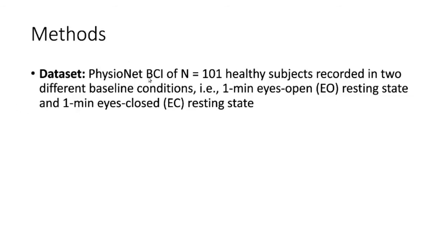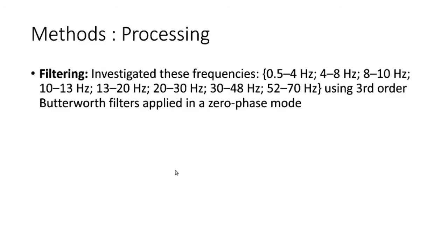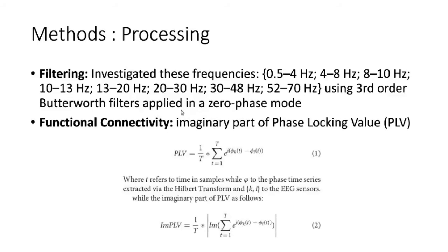The paper uses an open-source dataset: BCI with 101 healthy subjects recorded at baseline — one minute eyes open, one minute eyes closed, one session per subject. Preprocessing included notch filtering, single-subject data whitening with PCA to remove artifacts, and then bandpass filtering into specific frequency bands. The chronnectome is repeated on each of these frequency bands.